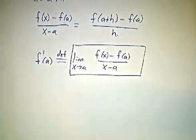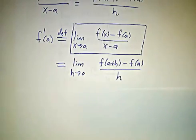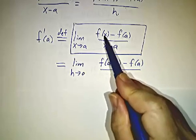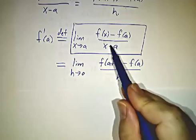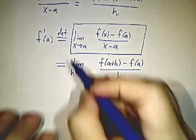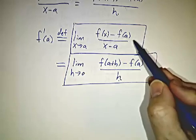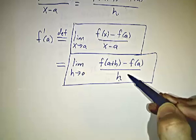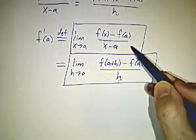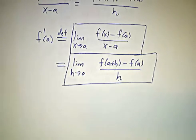So this limit is the same thing as this limit. f of A plus h, that's f of x. f of A, that's f of A. h, that's x minus A. So sometimes it's convenient to do the limits in this form. Sometimes it's more convenient to do the limit in this form, and they mean the exact same thing. Both of these expressions are the derivative of the function f of x at x equals A.